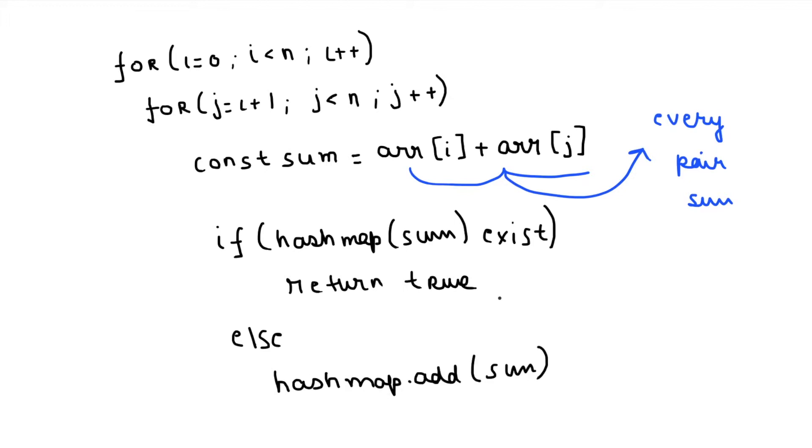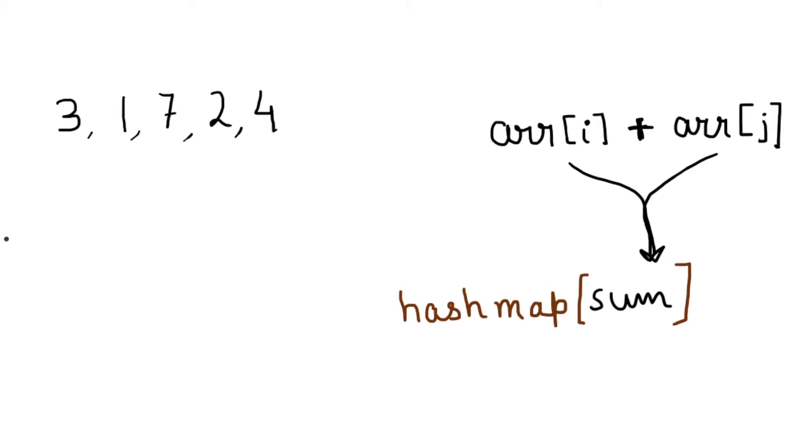In this way I am able to find whether a plus b is equal to c plus d or not. Let's take an example to understand this problem more clearly. So here are my distinct elements: three, one, seven, two, four.